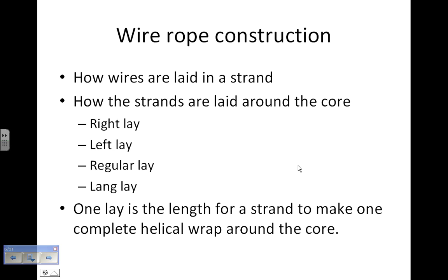The wires are laid in a strand, and then the strands are laid around the core. Page 19 of your book shows the right lay, left lay, regular lay, and lang lay. That has to do with the direction the strands are wound around the core. A lay is the length it takes for a strand to make one complete helical wrap around the core.